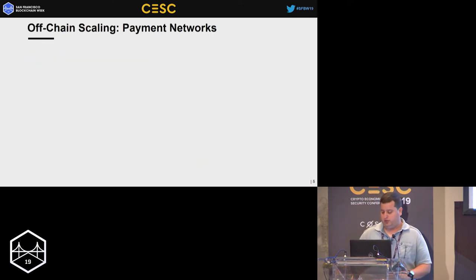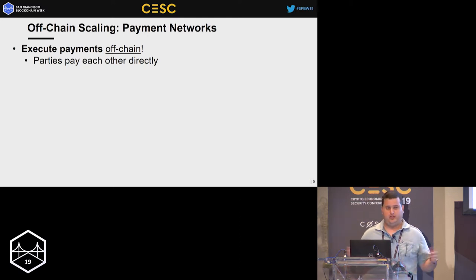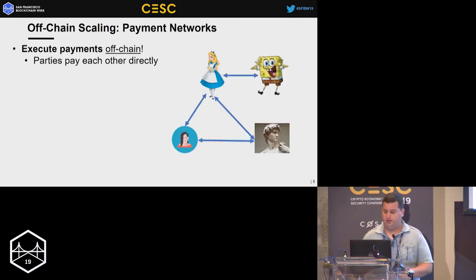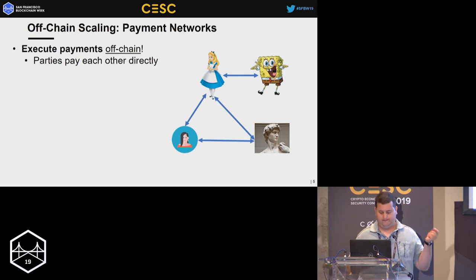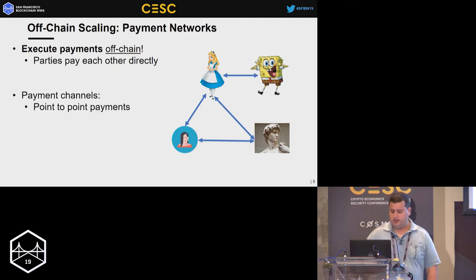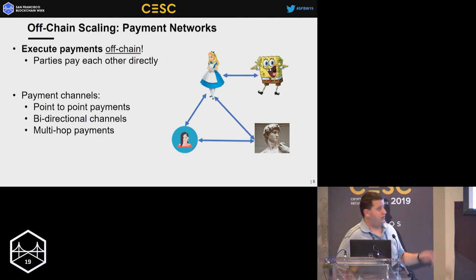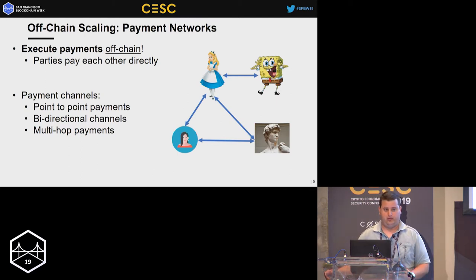Off-chain solutions are another avenue: payment networks where you execute payments off-chain. Parties pay each other directly, instead of broadcasting a transaction to every node in the network and having it processed as part of a block. Now we have a network of payment channels, where nodes are payment players and an edge in the graph is a payment channel. We'll discuss bidirectional channels, and also multi-hop payments — for example, Dave wants to pay Bob but has no direct channel, so he pays through an intermediary like Alice.